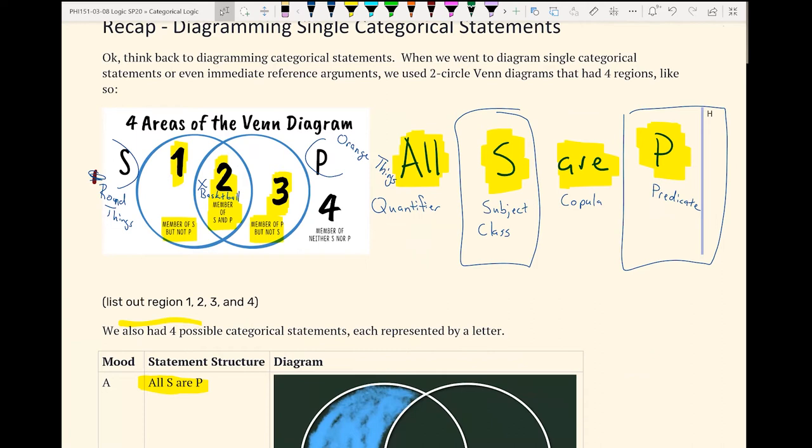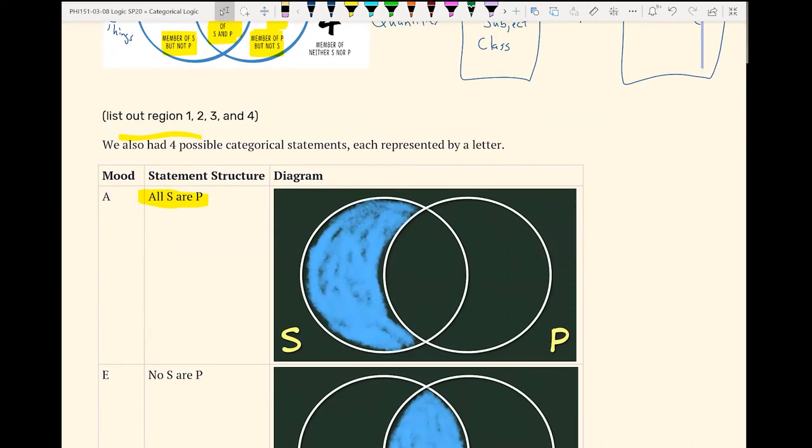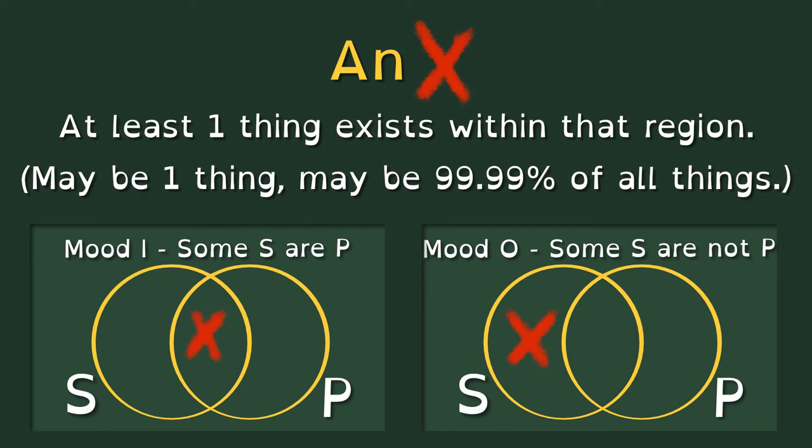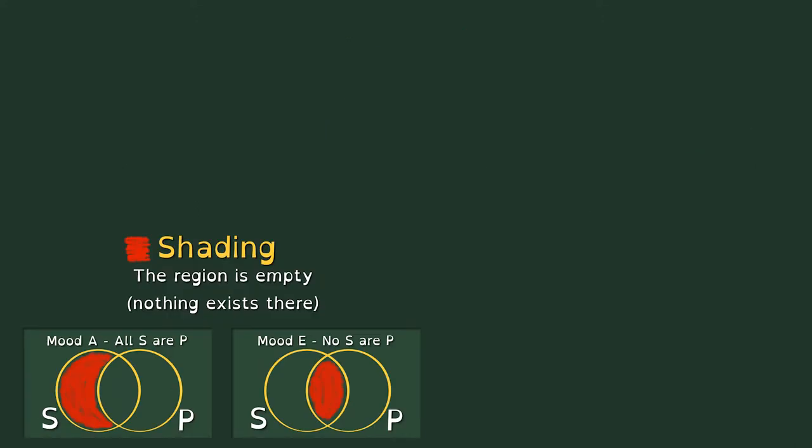When we go to diagram them themselves, we use shading. Shading means nothing exists there, and that's really important to wrap your mind around. When we say all or no, we're not saying anything exists or not. We're just saying if it did exist, this is what it would be like. And that can be difficult to wrap our minds around, but it's also pretty important. And X is our other type of mark, and that means at least one thing exists.